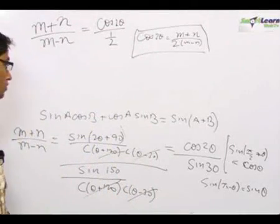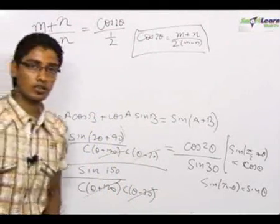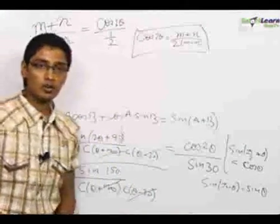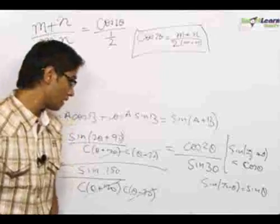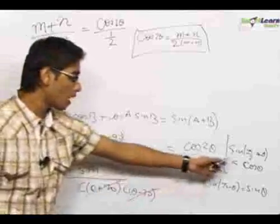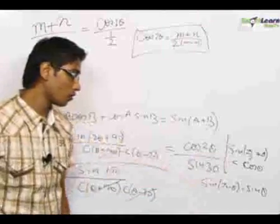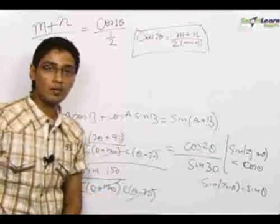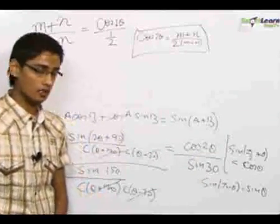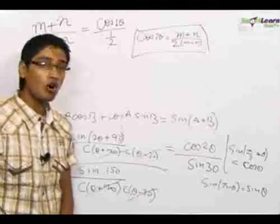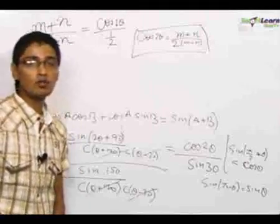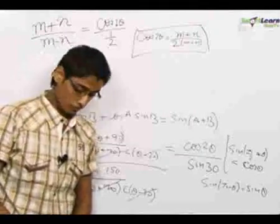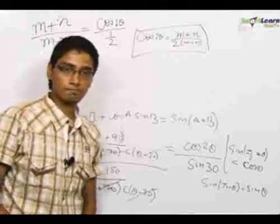In this question we used three important relations: one is componendo-dividendo, second is sin(π/2 + θ) = cos θ, and third is sin(π - θ) = sin θ. Componendo-dividendo is the most important relation and will be very useful in the forthcoming chapters.